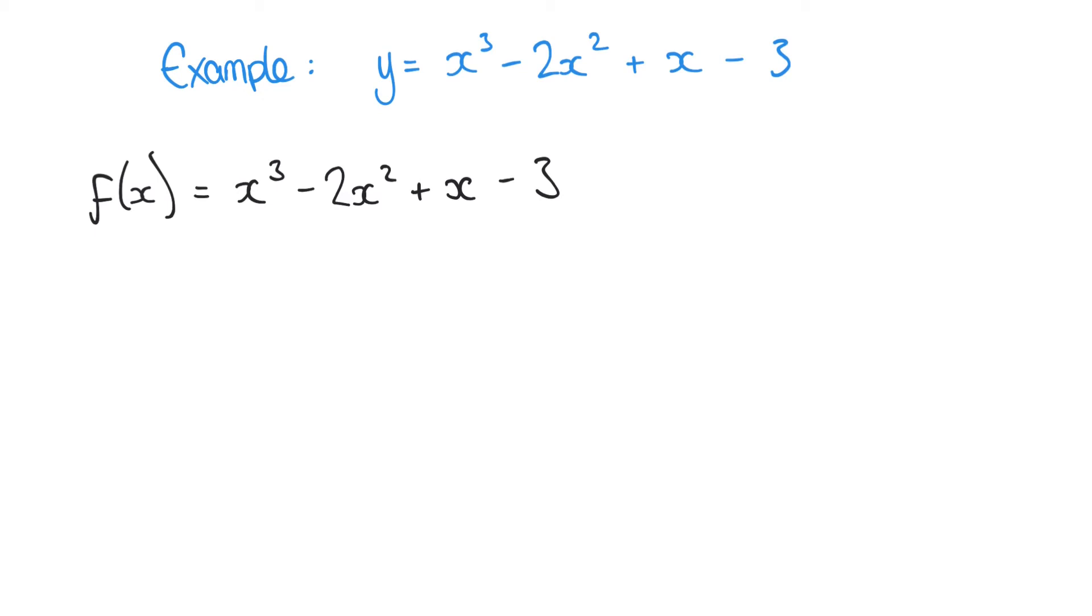The Newton-Raphson method also requires us to know the derivative of that function. We can differentiate that expression f(x) to find f'(x), the differential, which in this case is 3x² - 4x + 1. If you're not sure how to differentiate a polynomial expression, we've got other videos where we cover that, but in this case we now know our original expression and also its derivative.